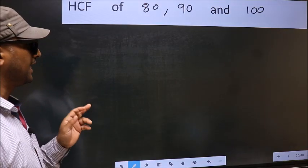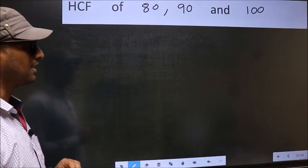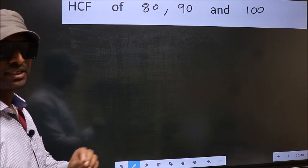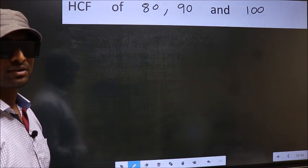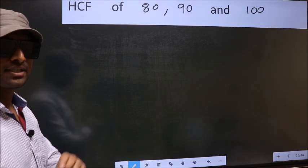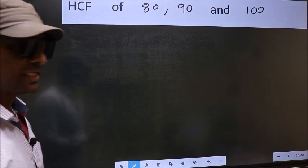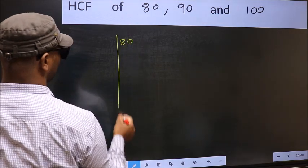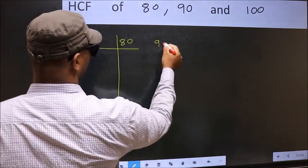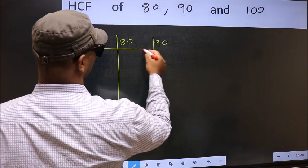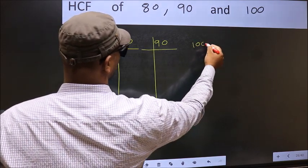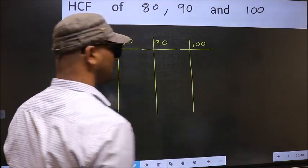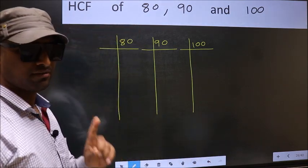HCF of 80, 90 and 100. To find the HCF, we should do the prime factorization of each number separately — that is, 80, 90 and 100. This is step 1.